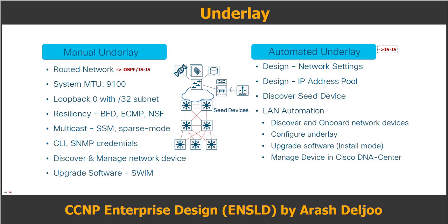In summary, for the underlay we have two design options — manual and automated — with automated being preferred. The recommended routing protocol is ISIS as it has more scalability features than OSPF. Cisco DNA Center can automatically provision many underlay features.